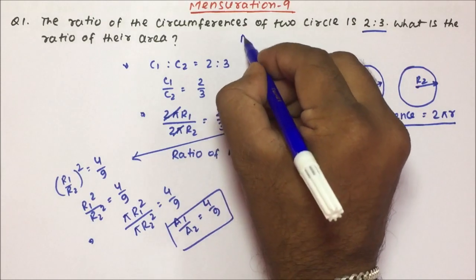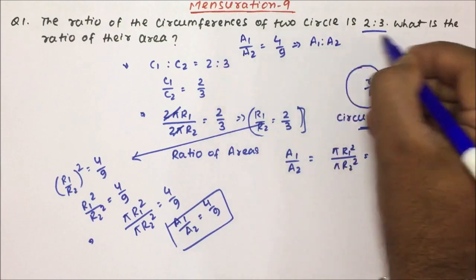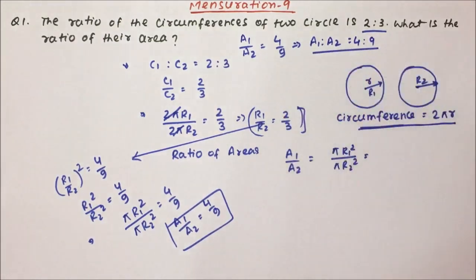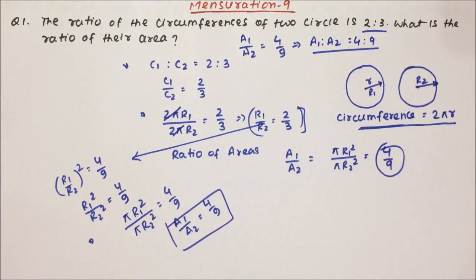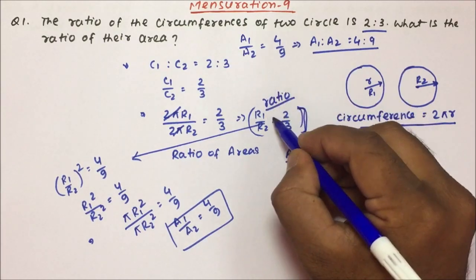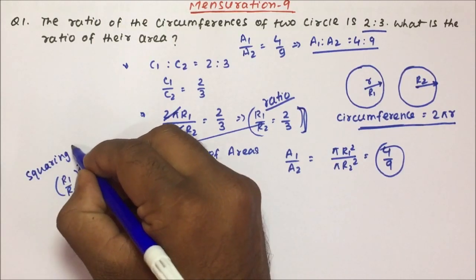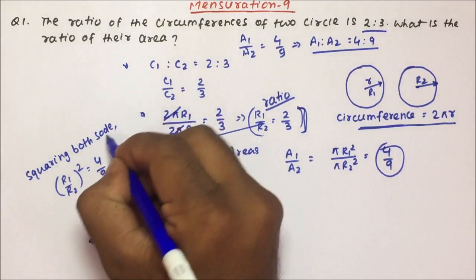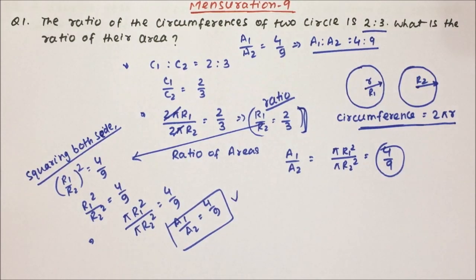So if they are asking you to calculate the ratio of the areas, it will be 4 by 9. A1 is to A2 equals 4 is to 9, and that is the correct answer for question number 1. You can directly write 4 by 9. The circumference ratio was given; from there we calculated the radius ratio, and once we had the radius ratio we squared both sides to get the area ratio of 4 is to 9.